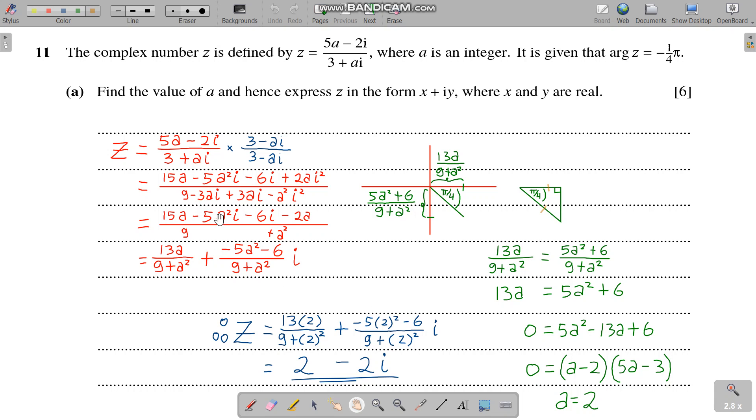Everyone, this question is about complex numbers. The complex number z is defined by z equals 5a minus 2i all over 3 plus ai, where a is an integer. The argument of z is minus 1/4 pi. Find the value of a and hence express z in the form x plus iy. Six marks. Okay, so the first step is to multiply both parts by the complex conjugate.